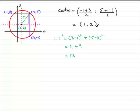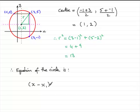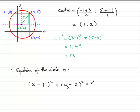Now that we've got the centre and the radius squared, we can write the equation of the circle. The general form is x minus x1, all squared, plus y minus y1, all squared, equals the radius squared, with centre x1, y1. We know x1 is 1 and y1 is 2, so we substitute in to get x minus 1, all squared, plus y minus 2, all squared, equals 13. That's the equation of the circle.